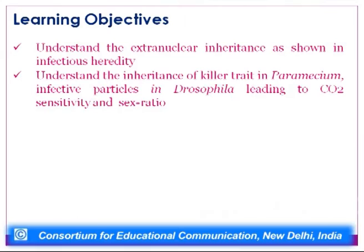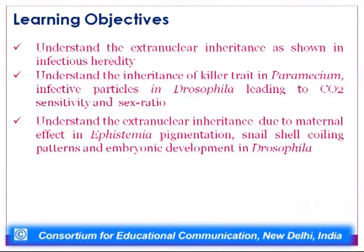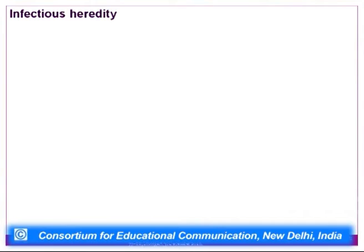Now we will talk about other mechanisms of extra nuclear inheritance beyond organelle heredity: infectious heredity and the maternal effect. The specific learning objectives include understanding infectious heredity as shown by the killer trait in Paramecium, infective particles in Drosophila leading to carbon dioxide sensitivity and sex ratio distortion, and extra nuclear inheritance due to maternal effect in Ephestia pigmentation, snail shell coiling patterns, and embryonic development in Drosophila.